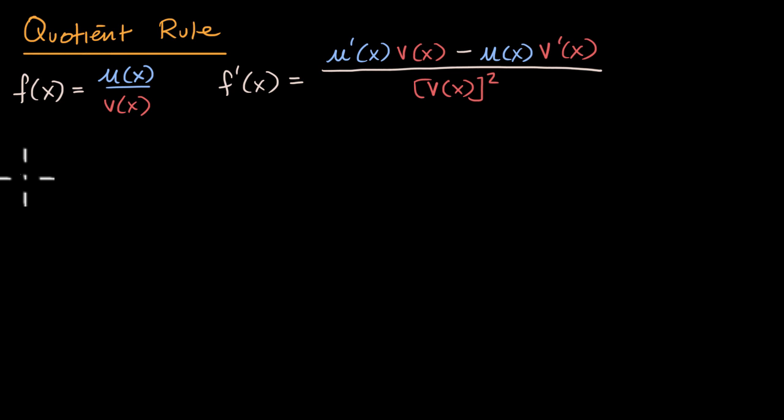So let's say that we have f(x) equals x² over cos(x). Well, what could be our u(x) and what could be our v(x)?